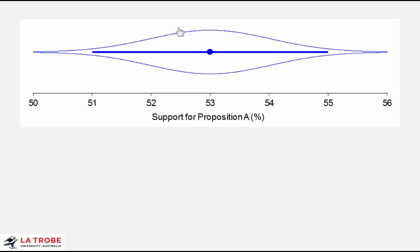Here's the cat's eye picture on a 95% confidence interval. The cat's eye tells us the relative plausibility or relative likelihood that these values along here will be the true level of support in the population. So where the cat's eye figure is fat, where this curve is high, we've got relatively high plausibility.